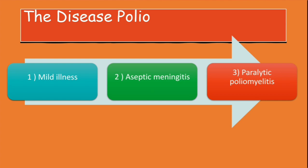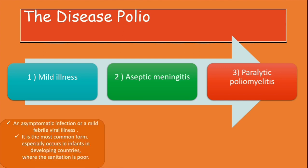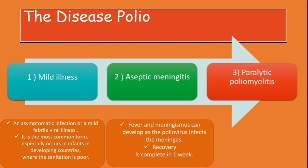Polio has three manifestations: number one, mild illness; number two, aseptic meningitis; and number three, paralytic poliomyelitis. Mild illness is an asymptomatic infection or a mild febrile viral illness. It is the most common form and is especially common in infants in developing countries where sanitation is poor. In aseptic meningitis, fever and meningitis can develop as the poliovirus infects the meninges, but recovery is complete in one week.